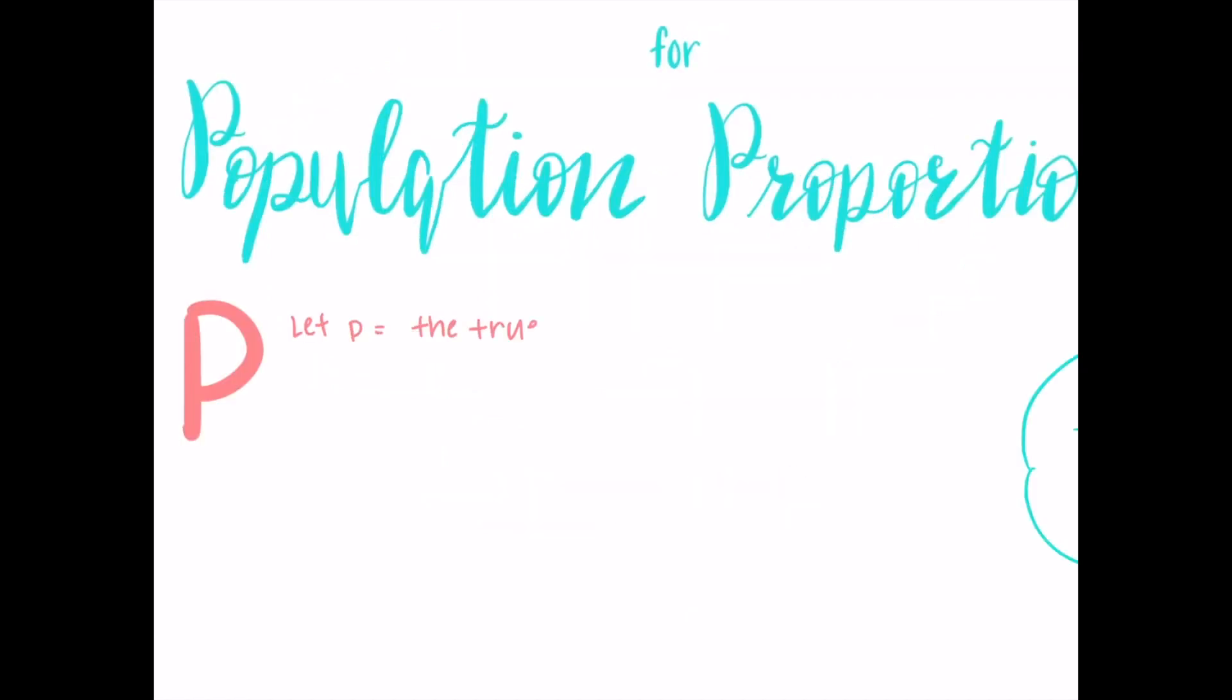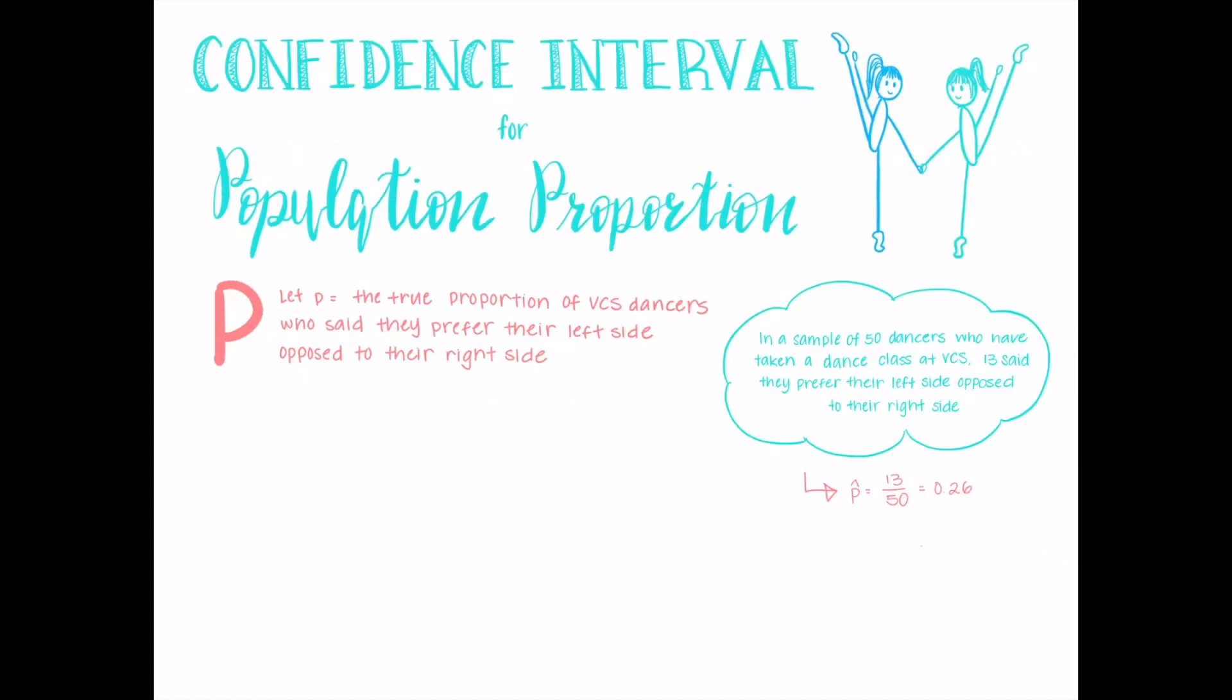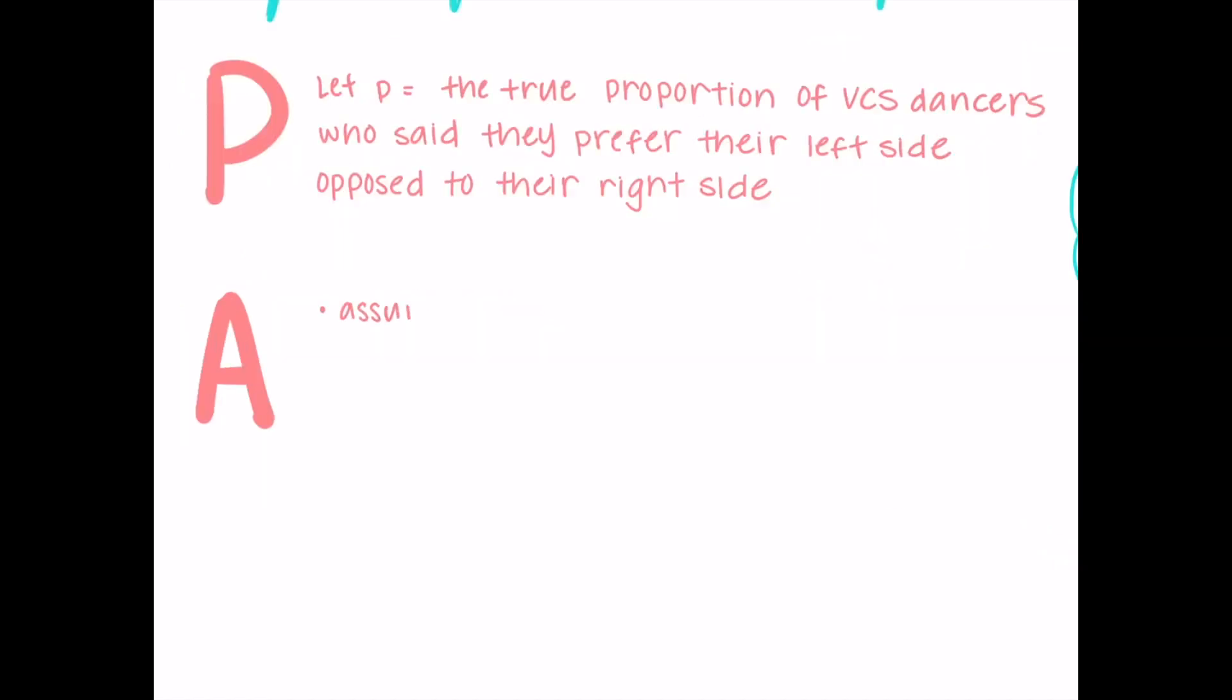Once again, we use PANIC. We let the population parameter P equal the true proportion of VCS dancers who prefer their left side as opposed to their right. Our first assumption is to assume that the sample came from a simple random sample. The second assumption is that the sample of 50 is less than 10% of the population.